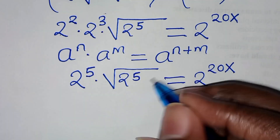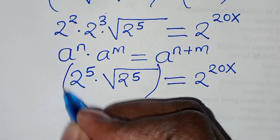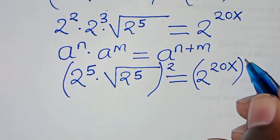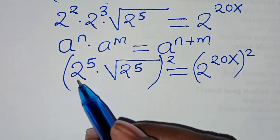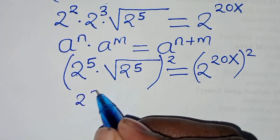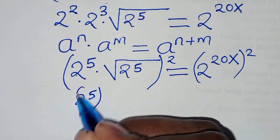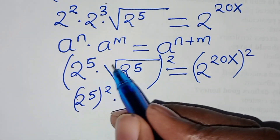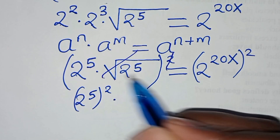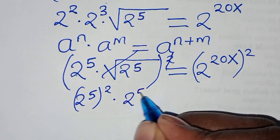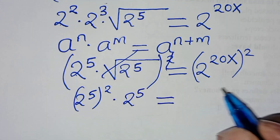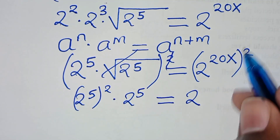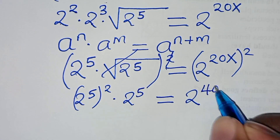The next step is to square both sides again, so that now here we have 2 to the power of 5 raised to the power of 2, then times — eliminating this square root sign — times 2 to the power of 5. This is equal to 2 to the power of 20x times 2, which is 40x.